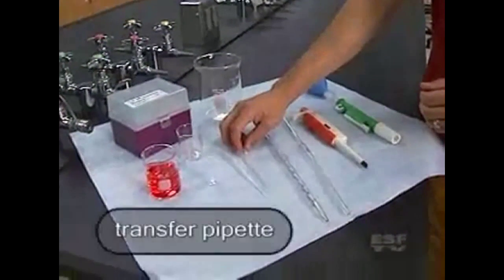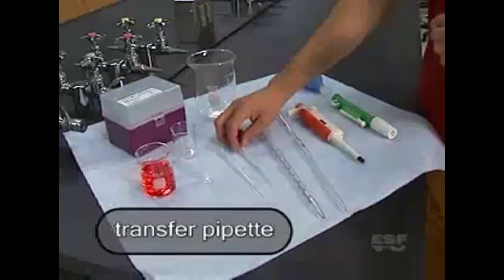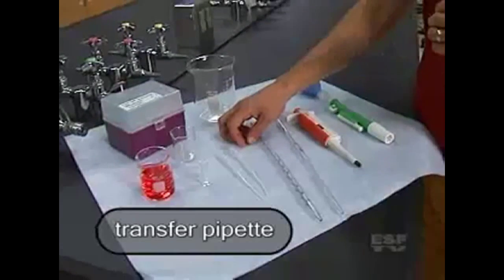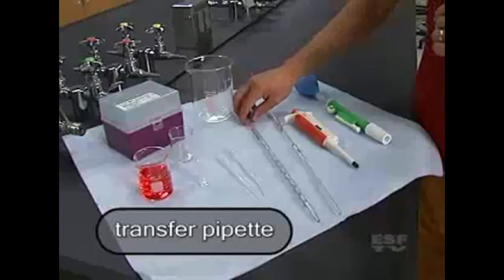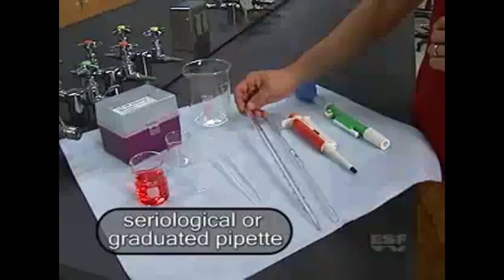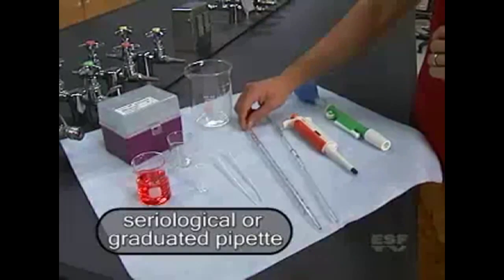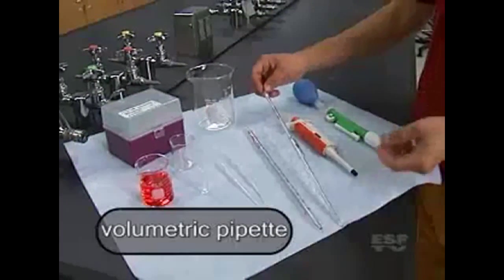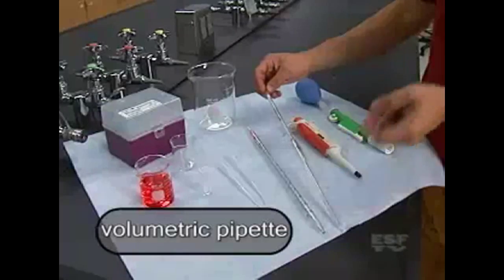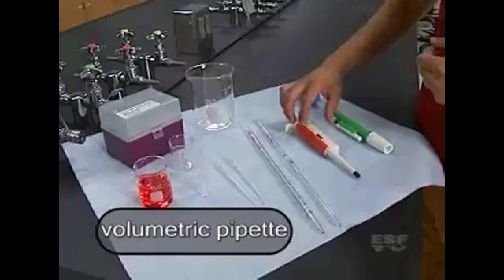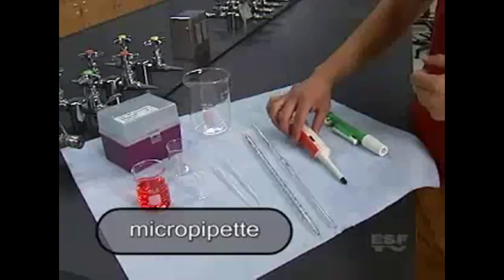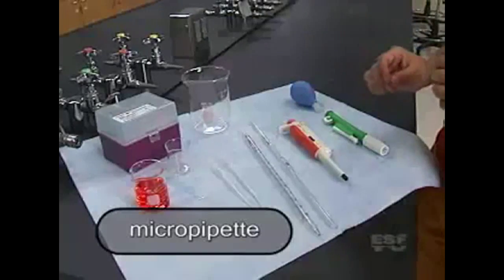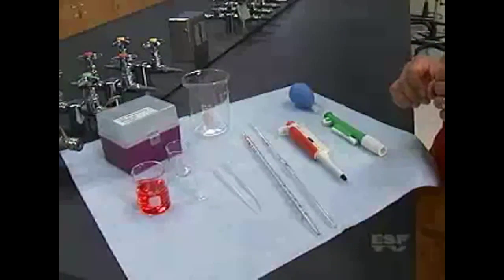First, we have a transfer pipette which is not necessarily very accurate but good for transferring solutions from one container to another. We also have a serological or graduated pipette which has markings and milliliter increments. We have a volumetric pipette which is very accurate and a micro pipette. A micro pipette is good for very small volumes and you may use that in lab from time to time.